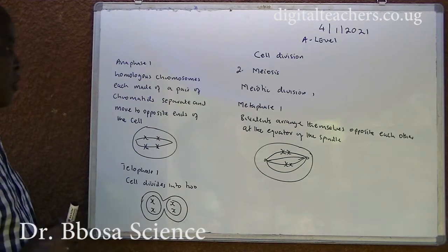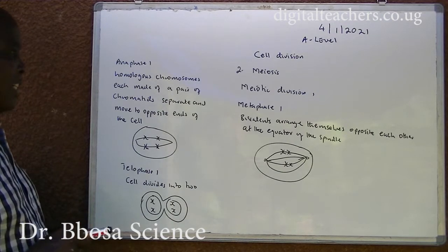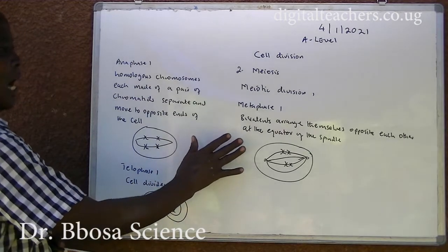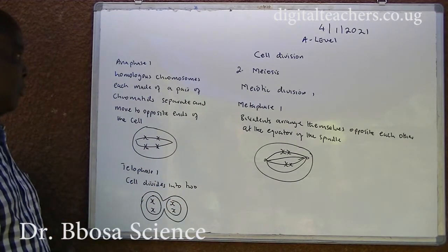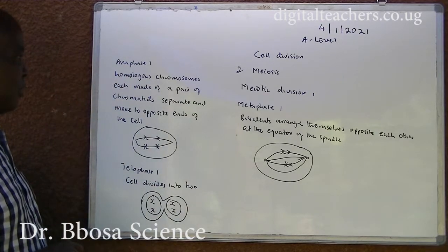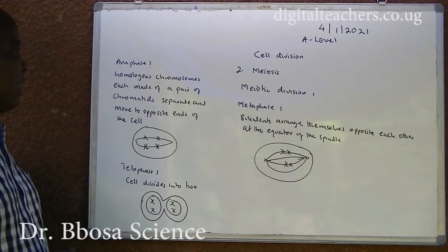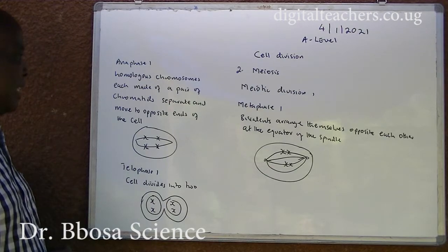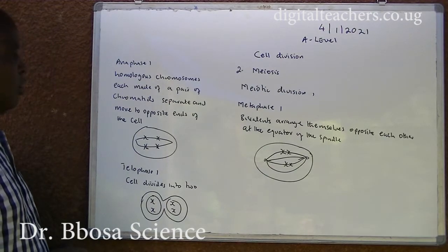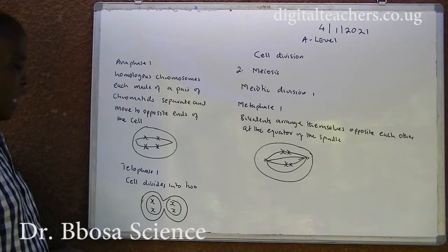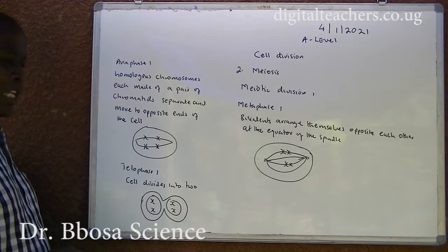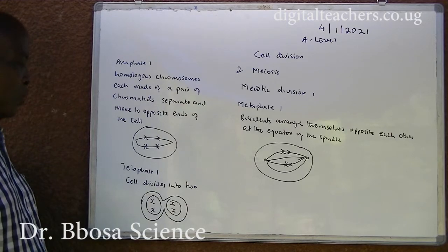Metaphase I: bivalents arrange themselves opposite each other at the equator of the spindle. Anaphase I: homologous chromosomes, each made of a pair of chromatids, separate and move to opposite ends of the cell. Telophase I: the cell divides into two.